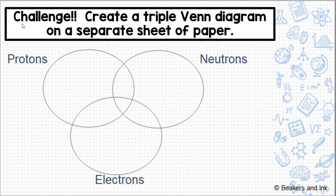Lastly, I have a challenge for you. On a separate sheet of paper, go ahead and create a triple Venn diagram, and see what you can find that is similar and different about the protons, neutrons, and electrons. You might have to get a little bit creative, but I know you can do it. Good luck!